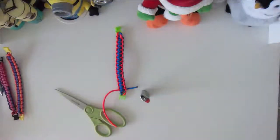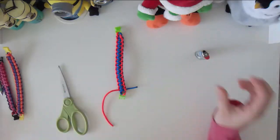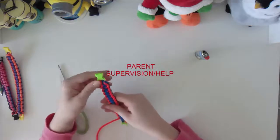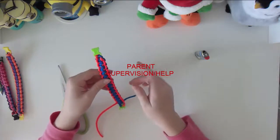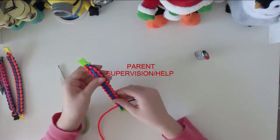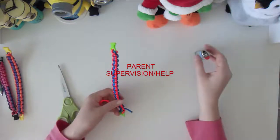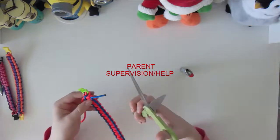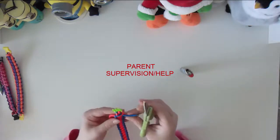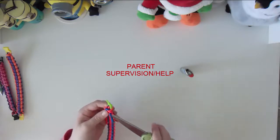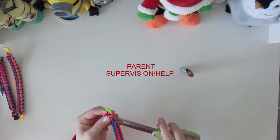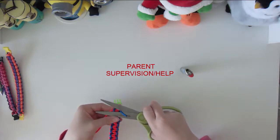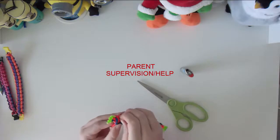I finished my bracelet. To close it, you might want a parent to help you or parent's supervision because you're going to be using a lighter. With your scissors, cut barely to where, to the end, just cut the whole thing leaving barely any rope.